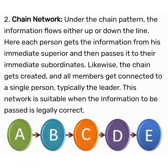Next is Chain Network, also known as Single Chain Network. It exists between a superior and his subordinates. Since there are a number of management levels and departments in an organization, there are many chains of communication. Under the chain pattern, the information flows either up or down the line. Each person gets the information from his immediate superior and then passes it to their immediate subordinates. Likewise, the chain gets created and all the members get connected to a single person, typically the leader. This network is suitable when the information to be passed is legally correct.